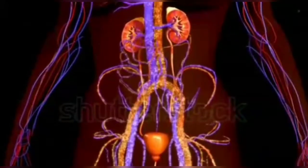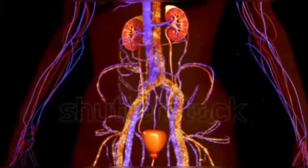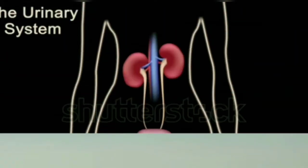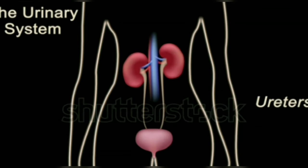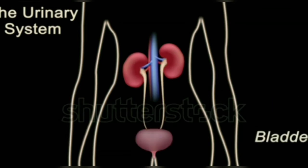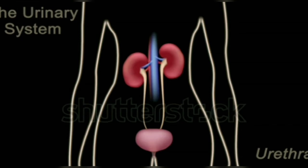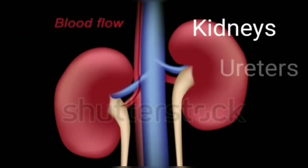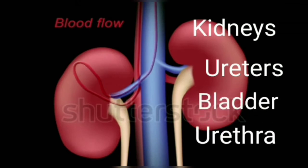From the kidneys, the urine goes into the urinary bladder through two ureters. It is stored in the bladder and is passed out through the urinary opening at the end of a muscular tube called the urethra. The kidneys, ureters, bladder, and urethra form the excretory system.